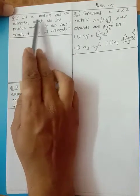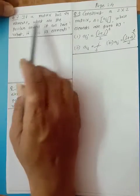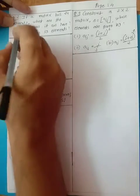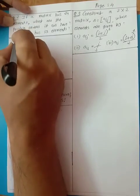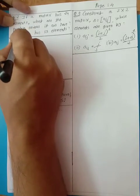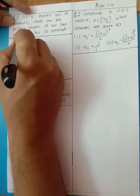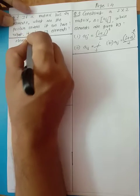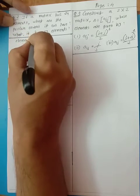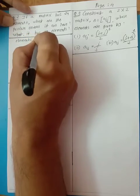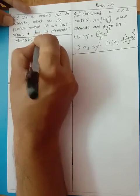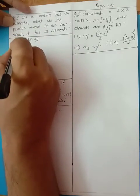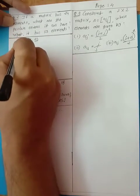First, if a matrix has 24 elements — elements total 24 — then how many orders can be made?